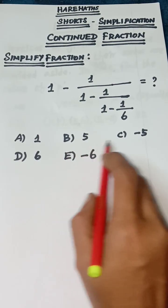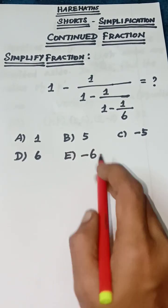Option A 1, option B 5, option C minus 5, option D 6, option E minus 6.